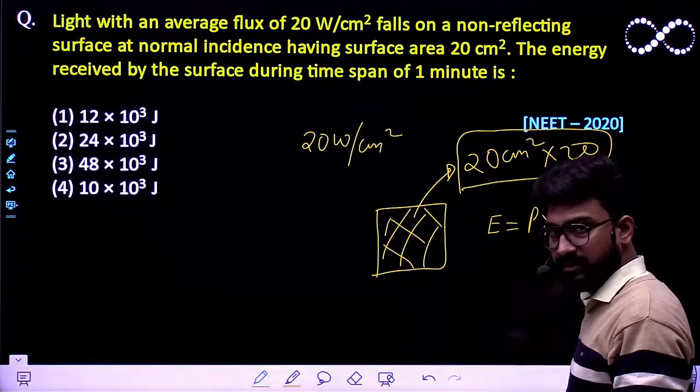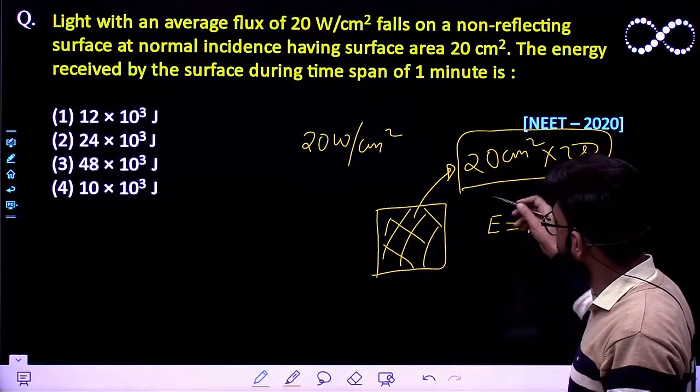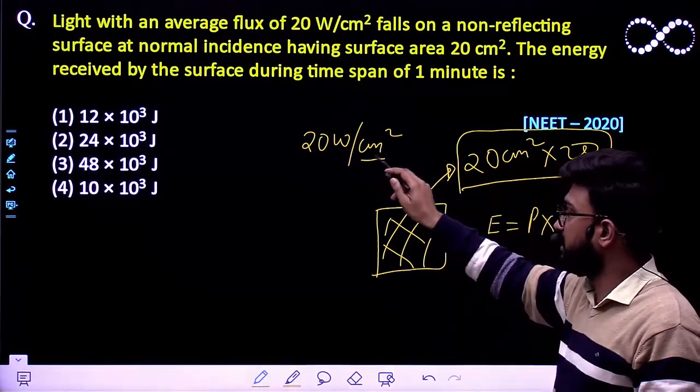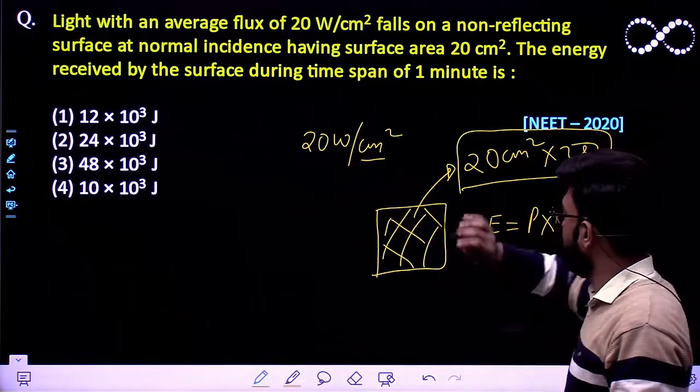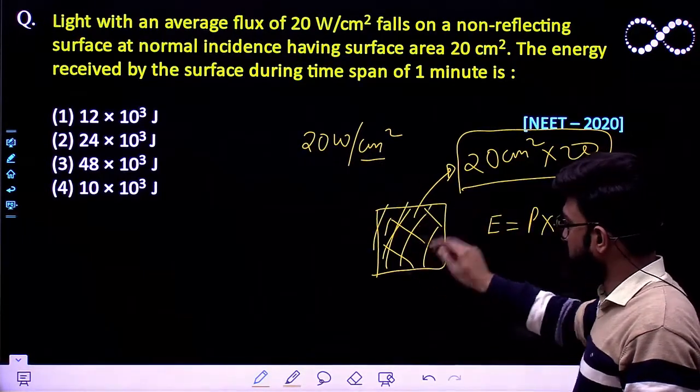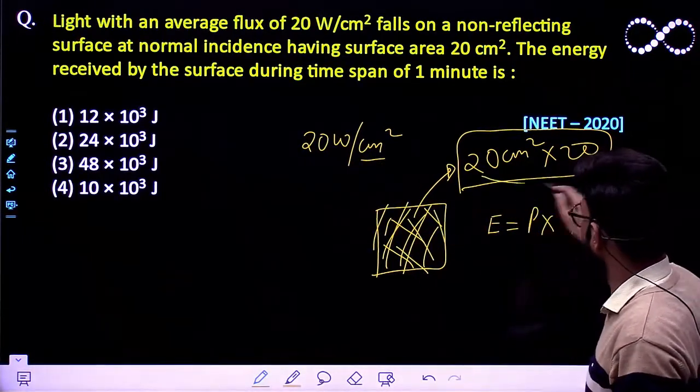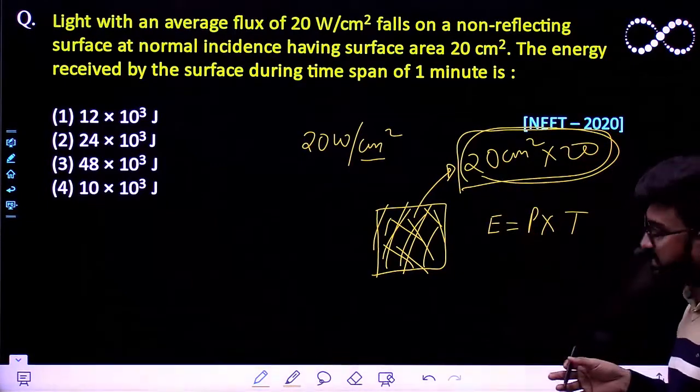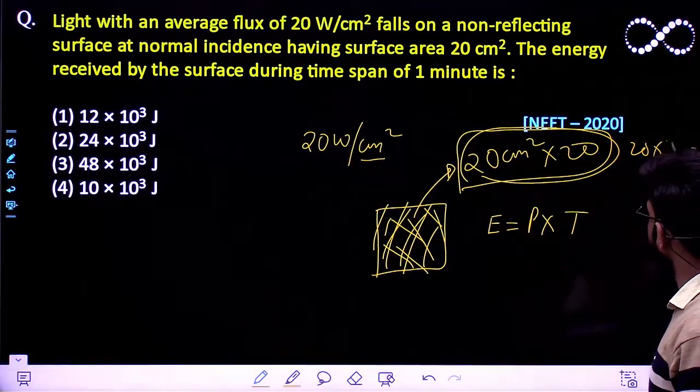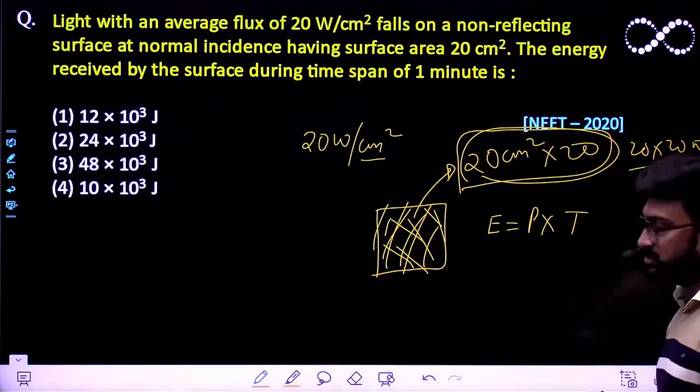Okay, don't you think? So the total power supplied must be equal to, because on each centimeter square area this much of power is supplied, so on 20 centimeter square area this much of the power would be supplied. 20 into 20 watt, this much of energy must be supplied.